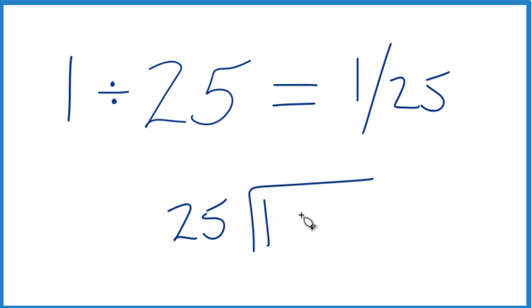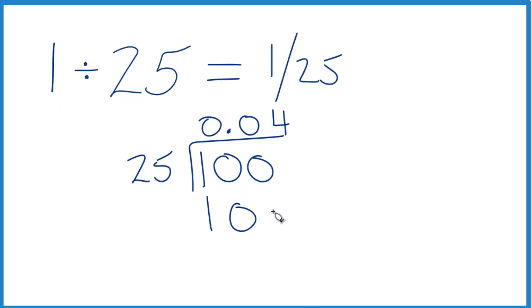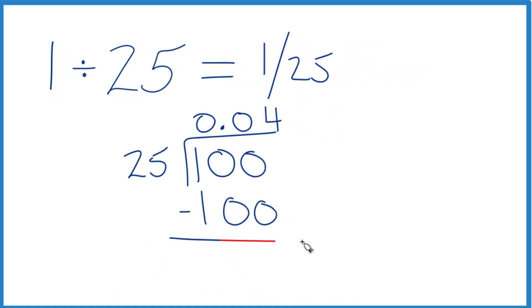So it doesn't fit into 1. We could call this 10, as long as you put a 0 and a decimal point up here. Still, it doesn't go into 10, so let's put a 0 after that, put another 0 here. Now 4 times 25, that's 100. And so if we subtract, we get 0.